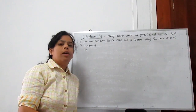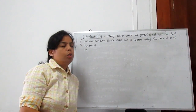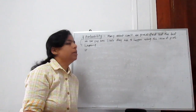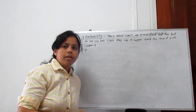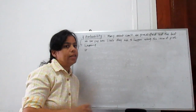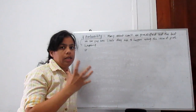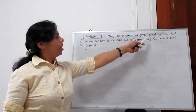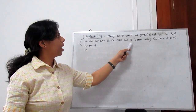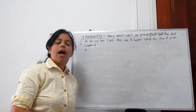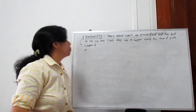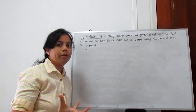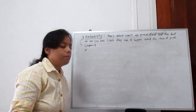Welcome to my new video. Today we learn about probability. So what is the basic concept and what is probability? Probability is just the happening of some event — we have to find that data, and it is called probability. Many events can't be predicted, but the best we can say is how likely they are to happen using the idea of probability — how many times something is happening, we can find with probability.